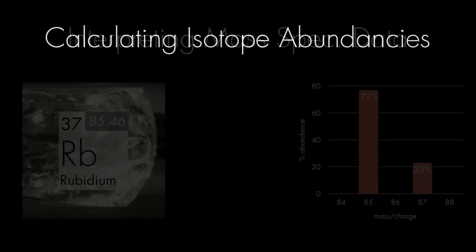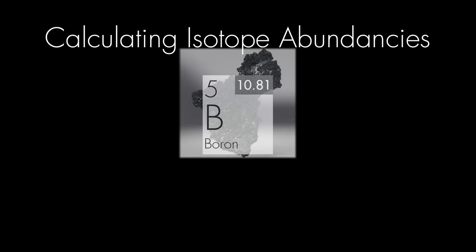Let's try the reverse. Let's calculate the relative abundances of boron-10 and boron-11 isotopes. First, let's imagine we had 100 of these boron atoms. Let's call the number of boron-10 atoms x. Then, the number of boron-11 atoms has to be 100 minus x.